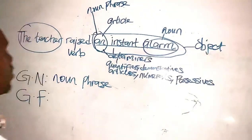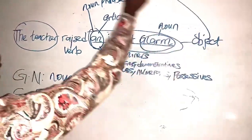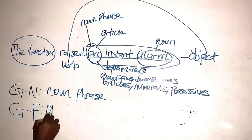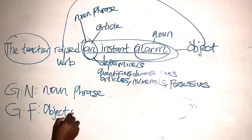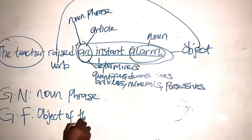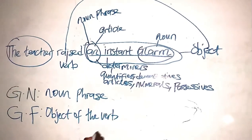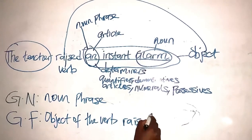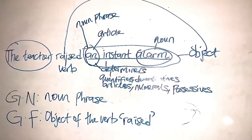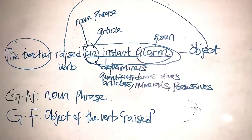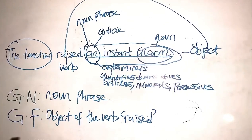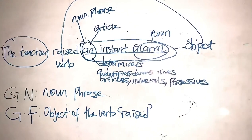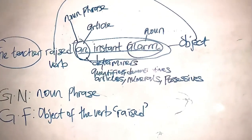It's an object. Object of this verb. Object of the verb 'raised.' So here you have it. The answer here is noun phrase, and the grammatical function is object of the verb 'raised.' Thanks for watching.